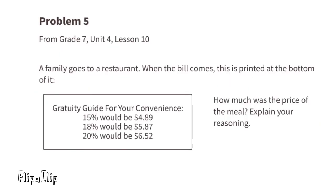Problem number five, from 7th grade Unit 4 Lesson 10: a family goes to a restaurant. When the bill comes, this is printed at the bottom — a gratuity guide: 15% would be $4.89, 18% would be $5.87, and 20% would be $6.52. How much was the price of the meal? Explain your reasoning.